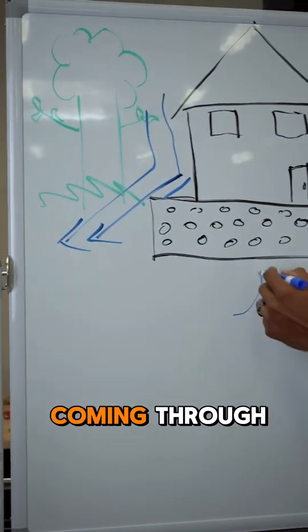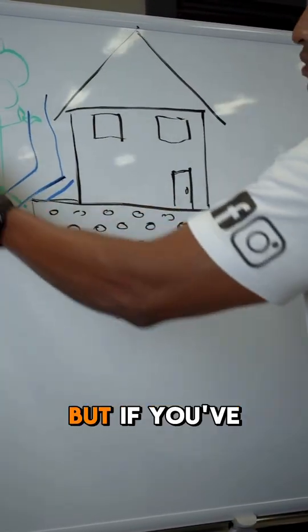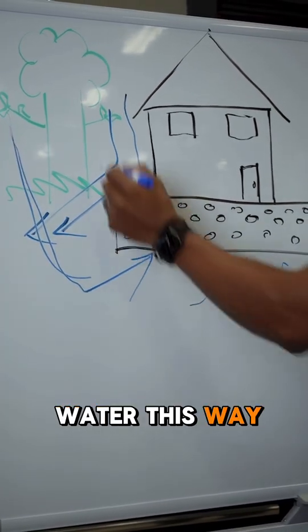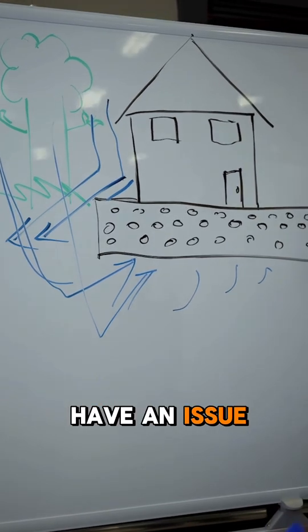Any water that's coming through, the vapor barrier will handle. But if you've got drainage that isn't working properly and it's diverting water this way, then we're going to have an issue.